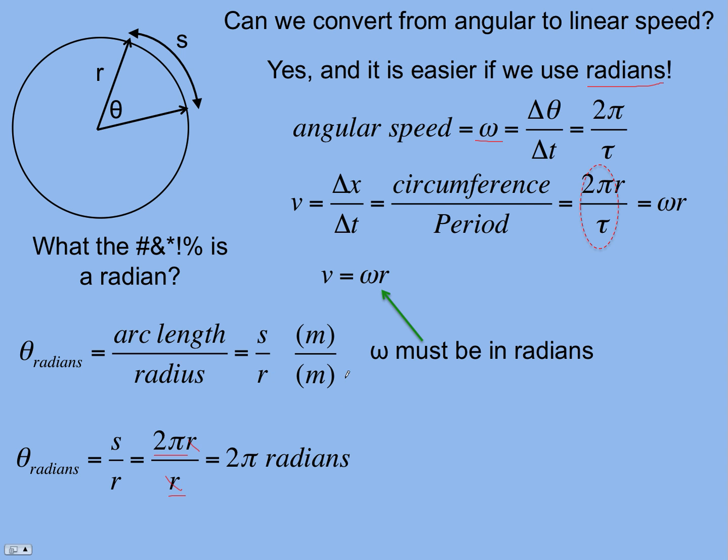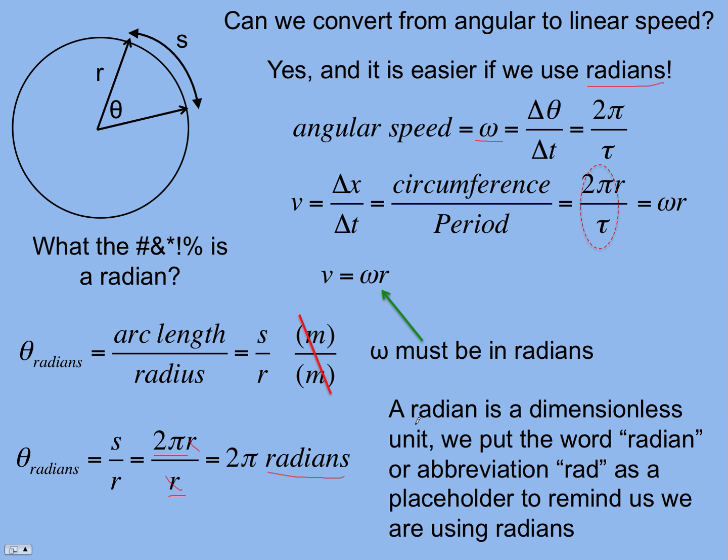A radian is kind of weird, though, because the units are really dimensionless. I write radians as a placeholder to remind myself that's what I used. But when you determine an angle in radians, you divide the arc length in meters by the radius in meters, so it is dimensionless. Again, the radians is just a placeholder. We put the word radian or rad. I usually try and avoid just putting r as a placeholder to remind us we're using radians.